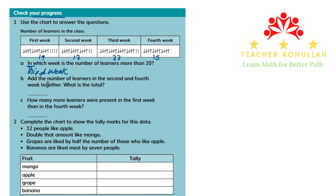Part B says: add the number of learners in the second and the fourth week together. What is the total? In the second week, we have 17 students, and in the fourth week, we have 15 students. 17 plus 15 is 32. So the total number of students in the second and fourth week is 32.